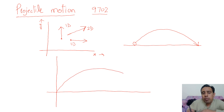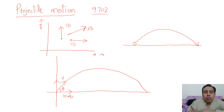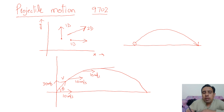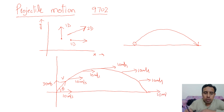If we describe the motion of the body with a certain velocity at some angle theta, we divide this velocity into components. For example, with a resultant velocity at that angle, the horizontal component is 10 and the vertical component is 30. The horizontal component remains 10 at every point along the path — it's 10 here, 10 at the top, 10, and 10 — meaning the horizontal velocity is constant.